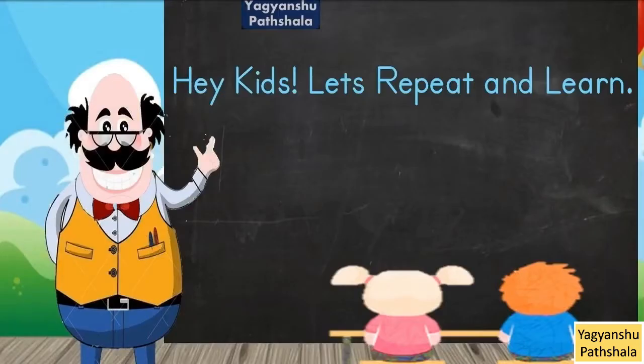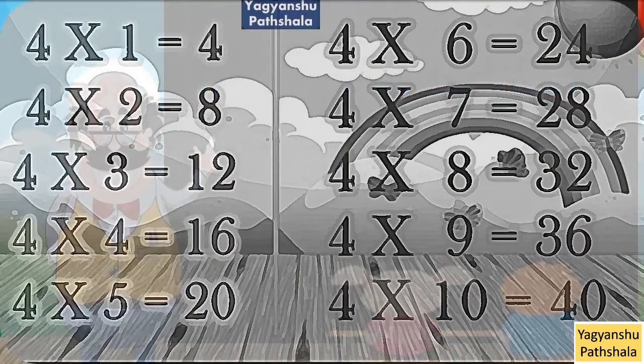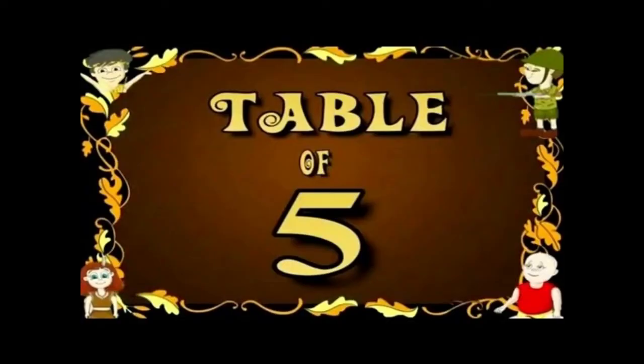Hey kids, let's repeat and learn. 4 into 1 is 4. 4 into 2 is 8. 4 into 3 is 12. 4 into 4 is 16. 4 into 5 is 20. 4 into 6 is 24. 4 into 7 is 28. 4 into 8 is 32. 4 into 9 is 36. 4 into 10 is 40.